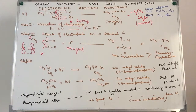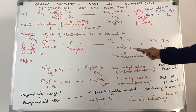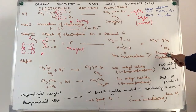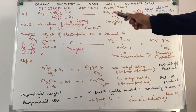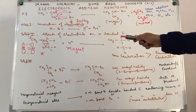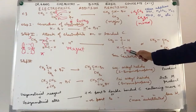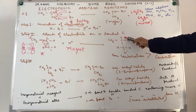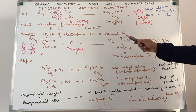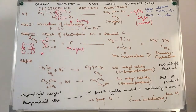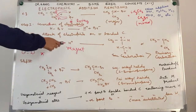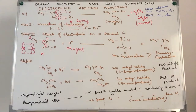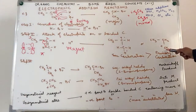Considering the two possibilities, we can have two types of carbocations being formed. If the electron pair moves to carbon number 1, H positive will attach to carbon number 1, and our second carbon gets a positive charge — it becomes short of electrons. Alternatively, if the pi electron moves to carbon number 2, H positive will attack carbon number 2, in which case it is carbon number 1 which acquires a positive charge.